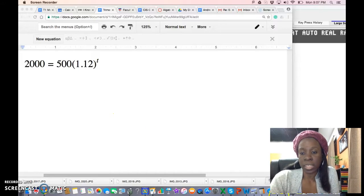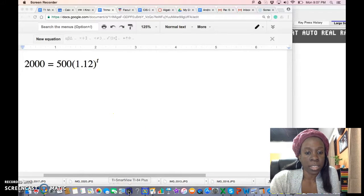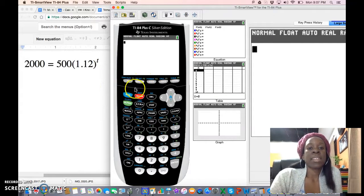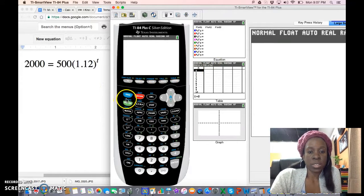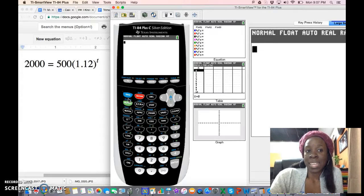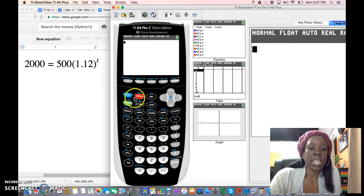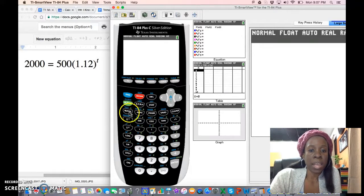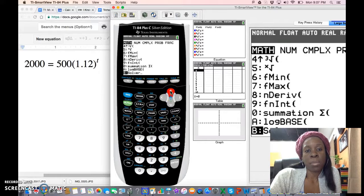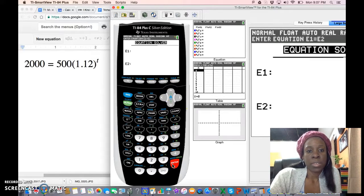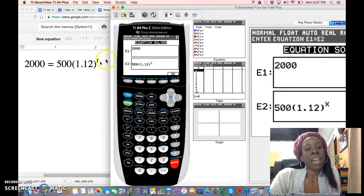I'm going to open up the calculator and this is the newer version. If you have the newer version, this is what it looks like and that's the one that lights up. In this case we would go to Math, which is right here, and you can scroll all the way down to the last option or scroll up to Solver and press enter.